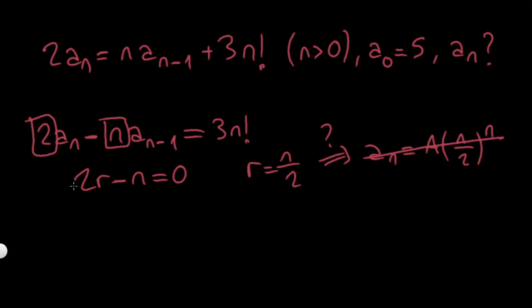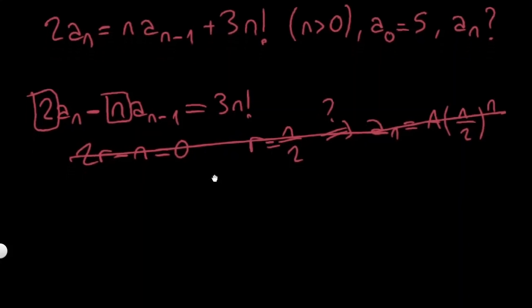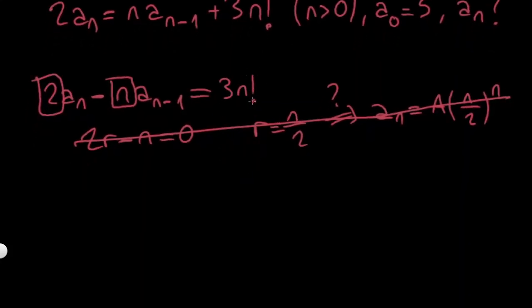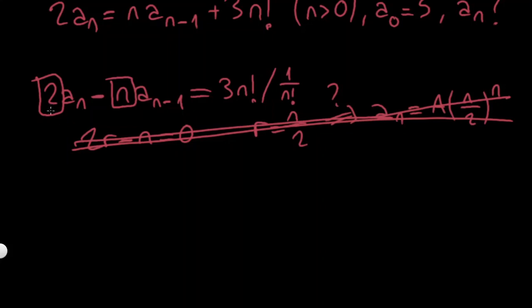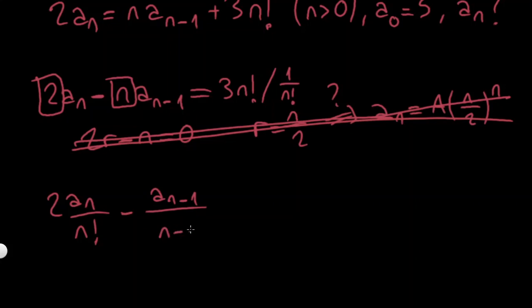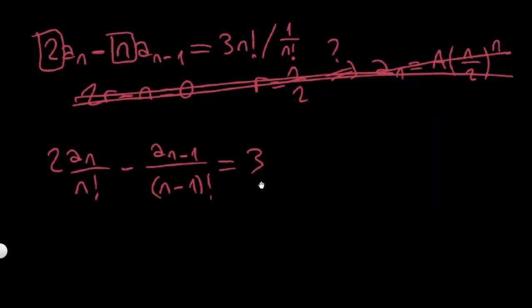This is not valid because it doesn't match the prerequisites. So instead let's try to get rid of this n factorial. I'm multiplying all sides by 1 over n factorial. I will have 2a_n over n factorial, and minus n over n factorial simplifies one n, leaving a_{n-1} over (n-1) factorial being equal to 3.